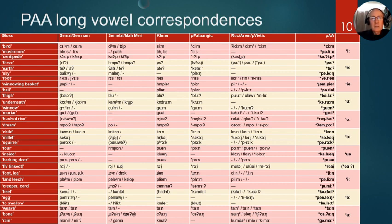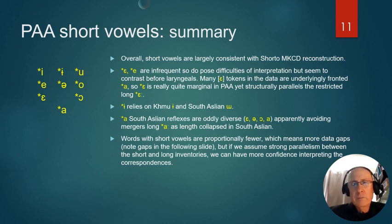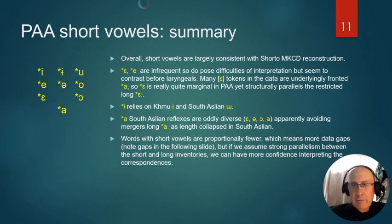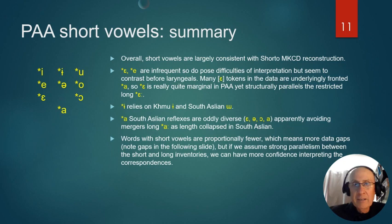Let's look at the short vowels. Overall, the short vowels are largely consistent with Shorto's Mon-Khmer Comparative Dictionary reconstructions. The short E are infrequent segments, so they do pose some difficulties of interpretation, but they do seem to contrast, particularly before laryngeals. Many E tokens in the data are underlyingly fronted A, usually in association with a palatal consonant. So actually, the short E is a quite marginal phoneme, but its presence before laryngeals structurally parallels the long A, so I'm fairly confident in this.